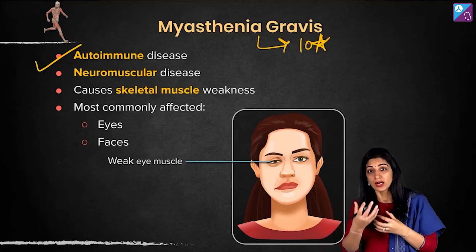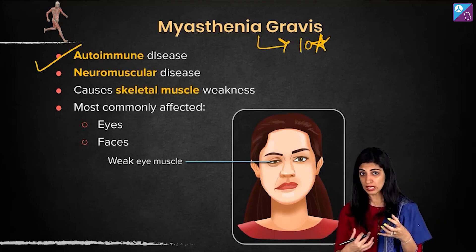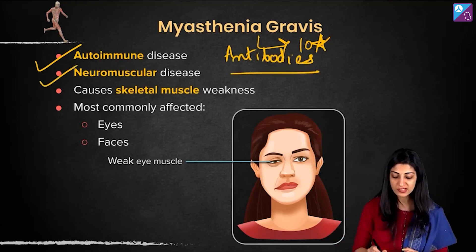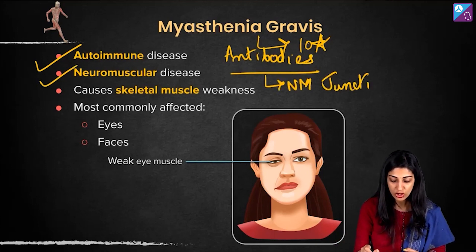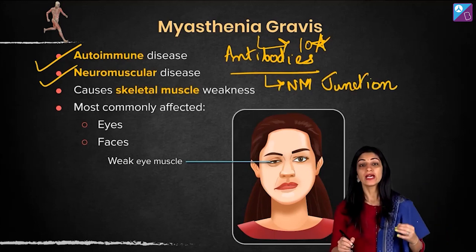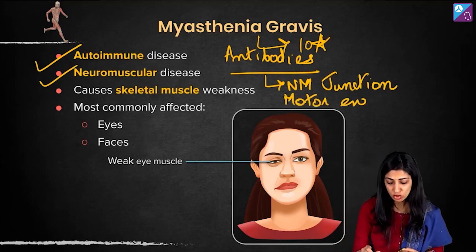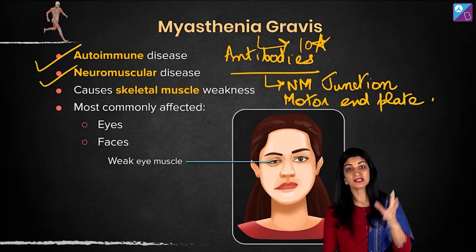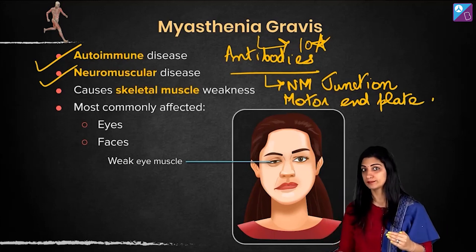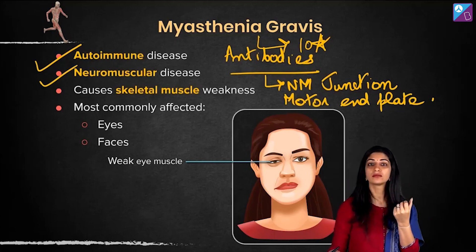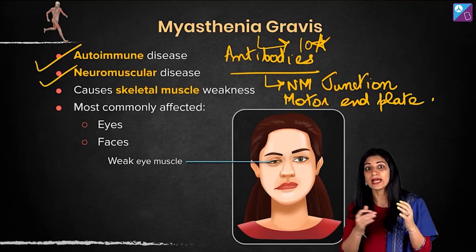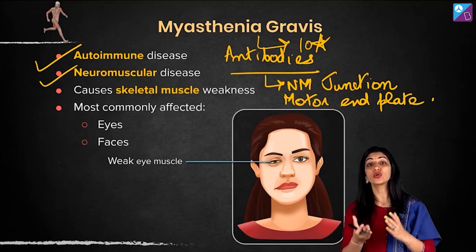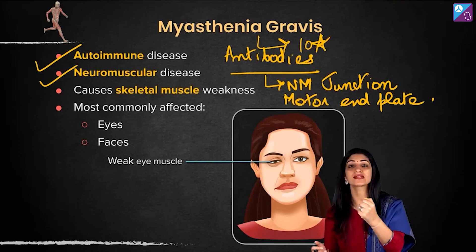The immune system - antibodies, rather - attack the neuromuscular junction, the NM junction, which you have studied in your previous session. At the motor end plate, for muscle contraction to happen, you remember the entire story of acetylcholine being released at the motor end plate. The receptors on the sarcolemma receive the acetylcholine, and then the wave of contraction starts. Now here, what will happen is these antibodies produced from our own body are going to attack those receptors.